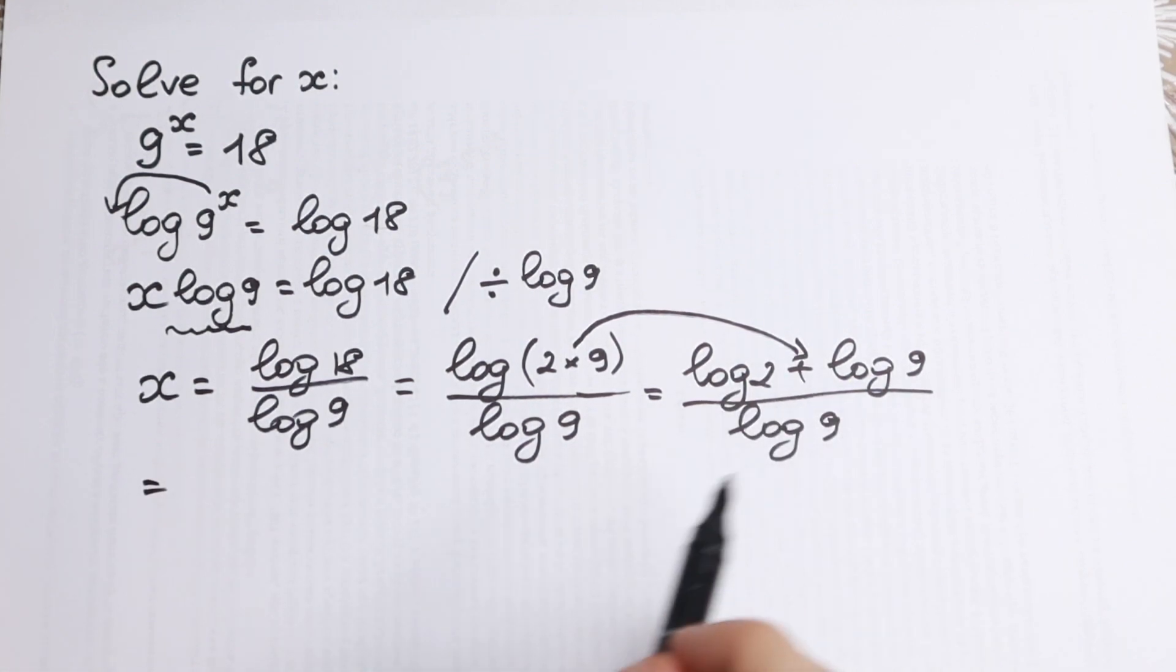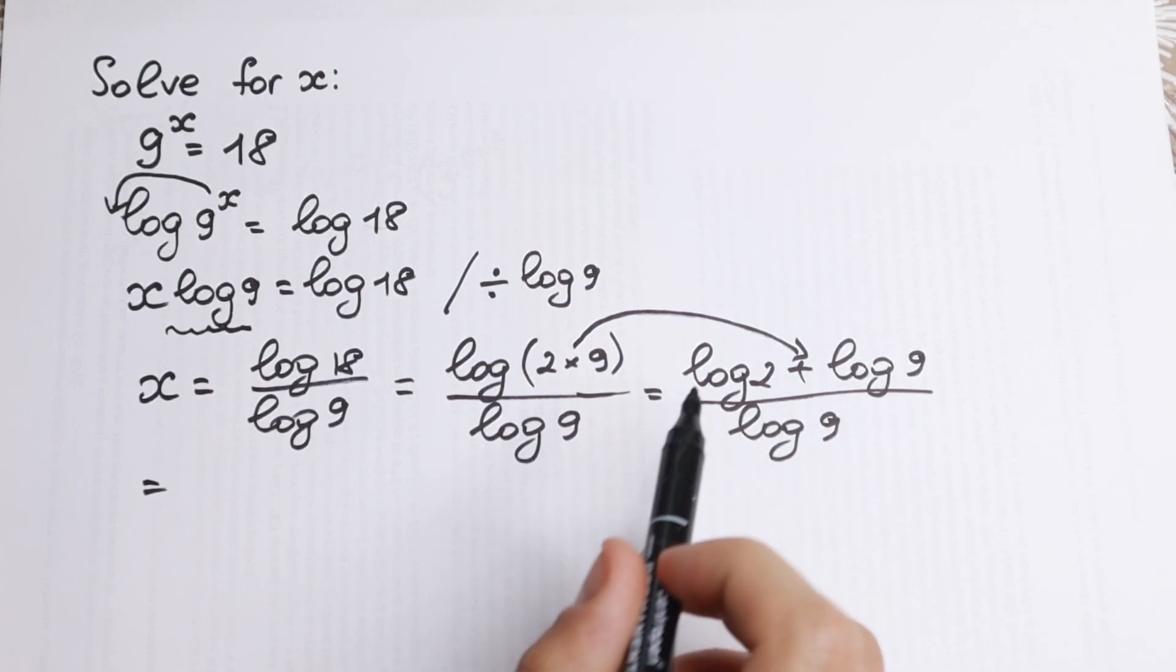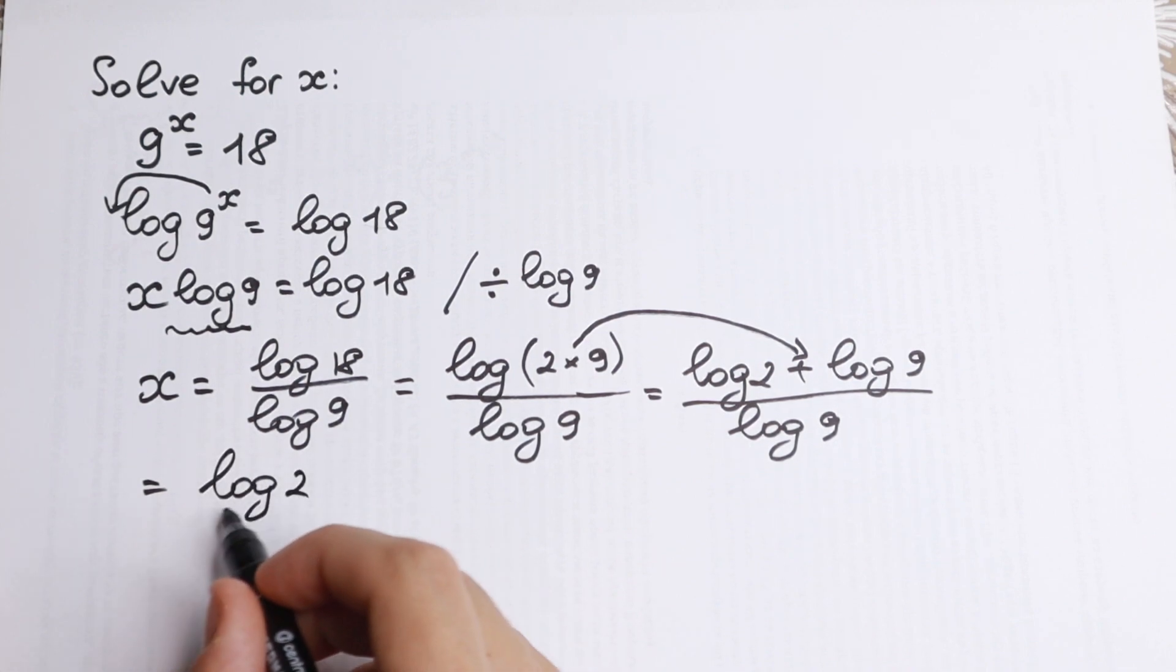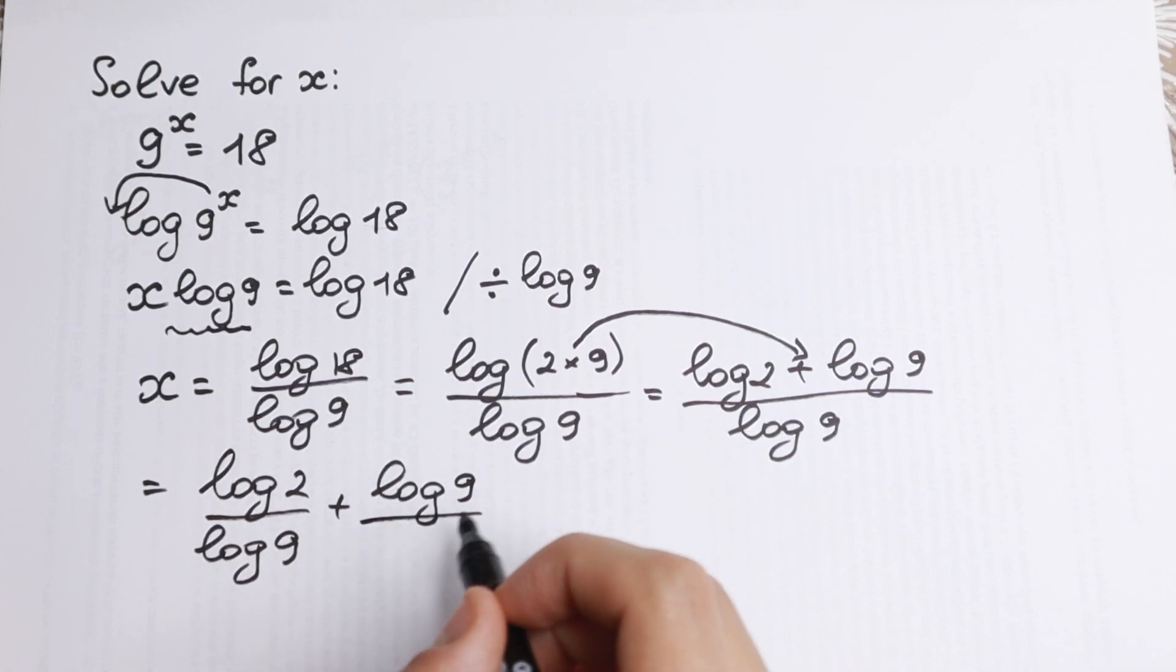OK, we have a sum in our numerator, and we have our denominator, which is the same as this element. So we can easily divide this - log 2 by log 9, plus log 9 over log 9.